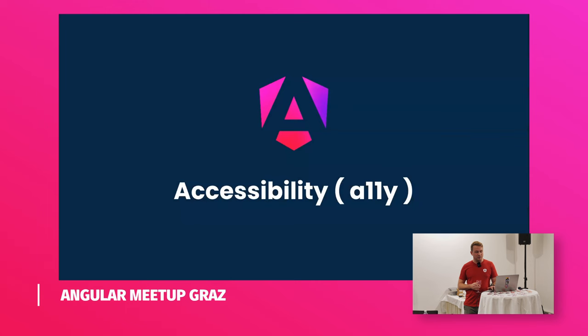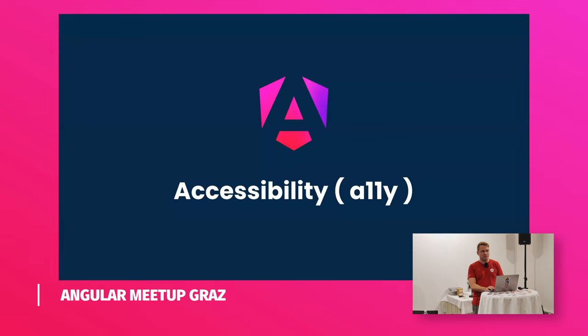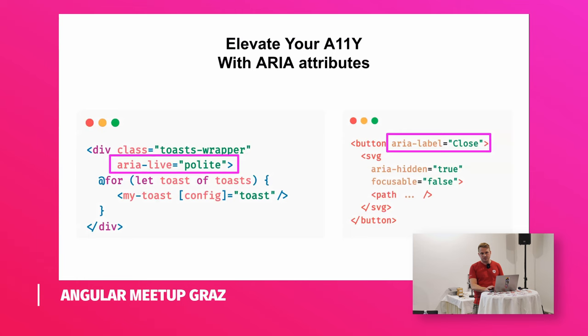There's a lot to be said about accessibility on the web, and for Angular that's not much different because Angular is just a web application. But there are specific things to consider when improving the accessibility of your Angular applications. The first thing you can do is elevate your applications with ARIA attributes — I won't go over the entire specification, but I will give you a few examples.